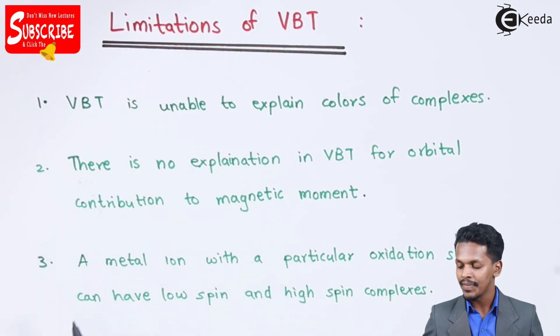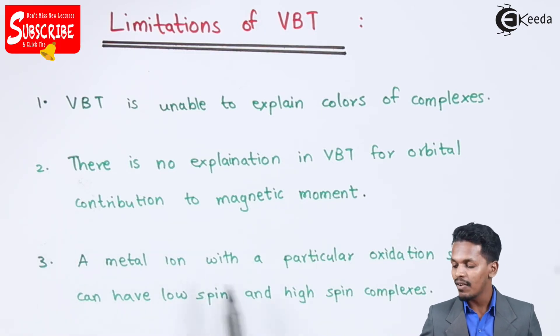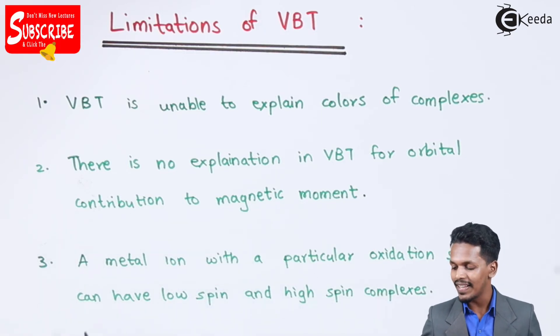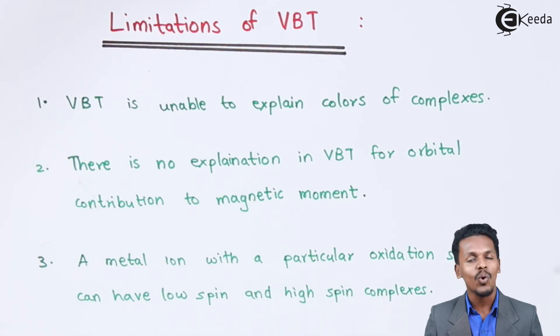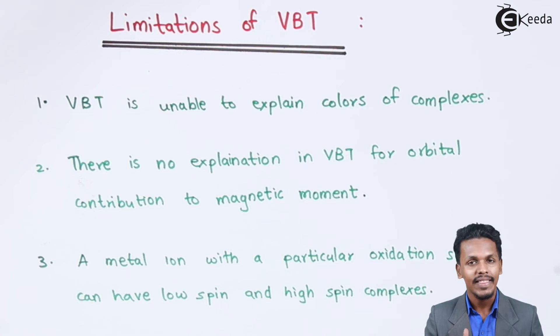Talking about the next point: a metal ion with a particular oxidation state can have low spin and high spin complexes. This was not explained by the valence bond theory.